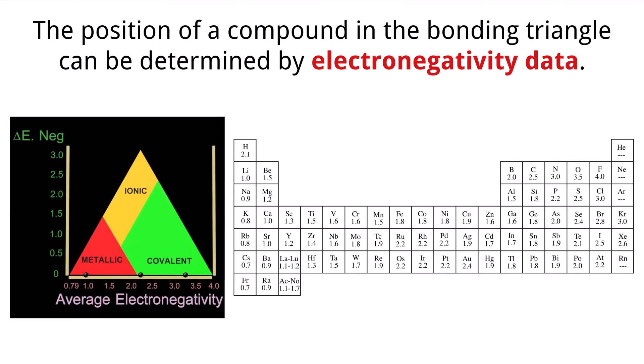How does the bonding triangle work? The triangle illustrates that these bonding types can be seen as extremes of a continuum, with pure metallic bonding at one corner, pure ionic bonding at another corner, and pure covalent bonding at the remaining corner. In reality, most materials exhibit a combination of these bonding types, with varying degrees of electron sharing and transferring.